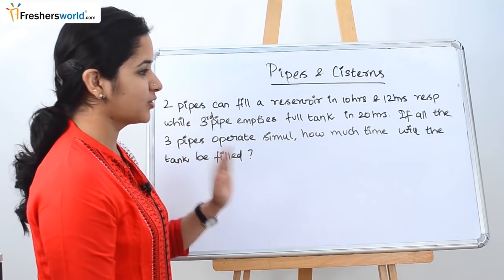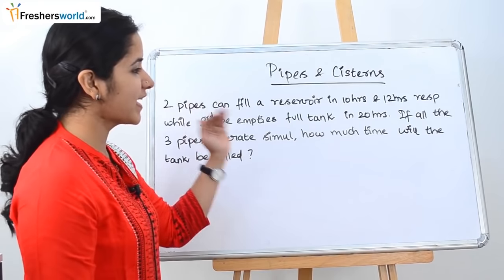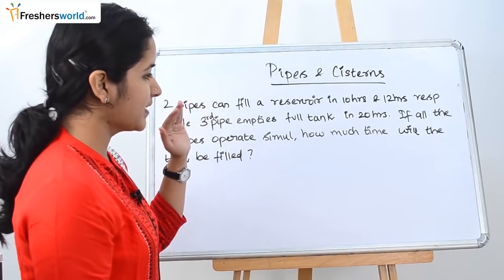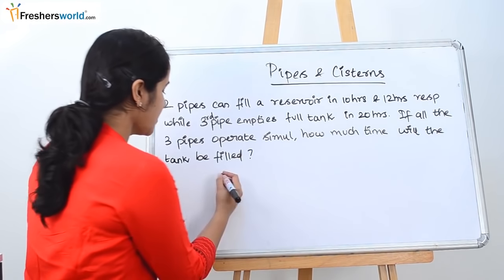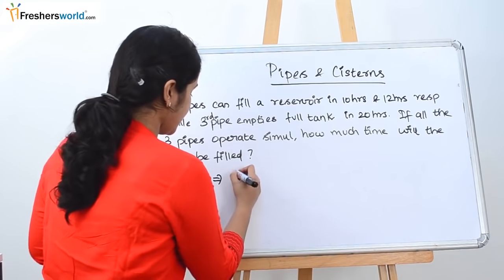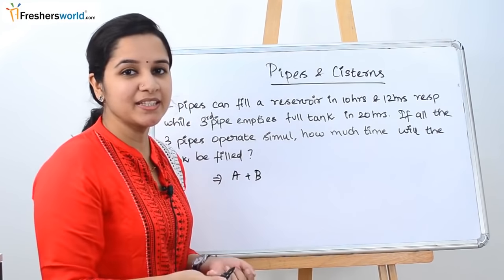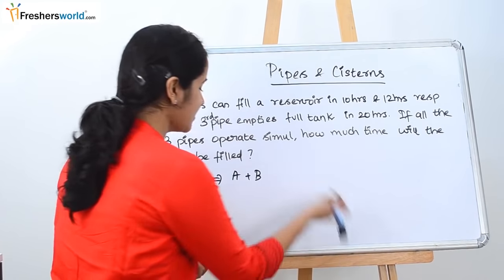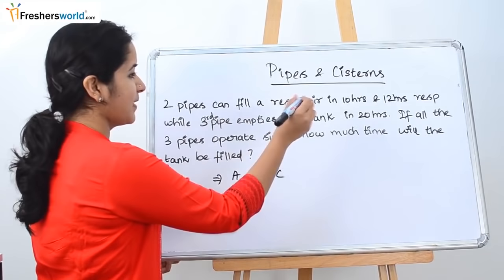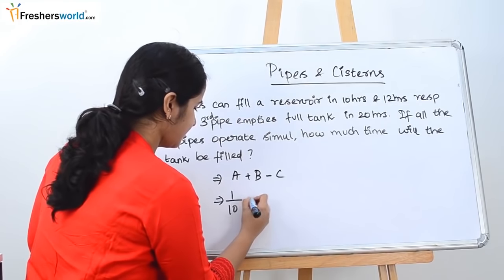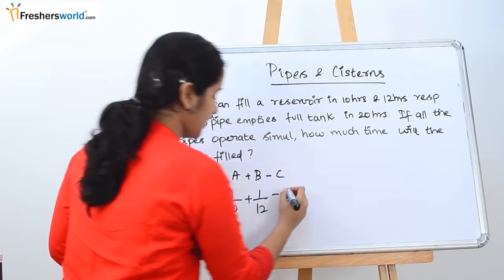The next question: two pipes can fill a reservoir in 10 hours and 12 hours respectively, while a third pipe empties the full tank in 20 hours. If all three pipes operate simultaneously, how much time will it take to fill the tank? We take the two filling pipes as A and B, and the emptying pipe as C. Emptying is negative, so A = 1/10, B = 1/12, and C = -1/20.